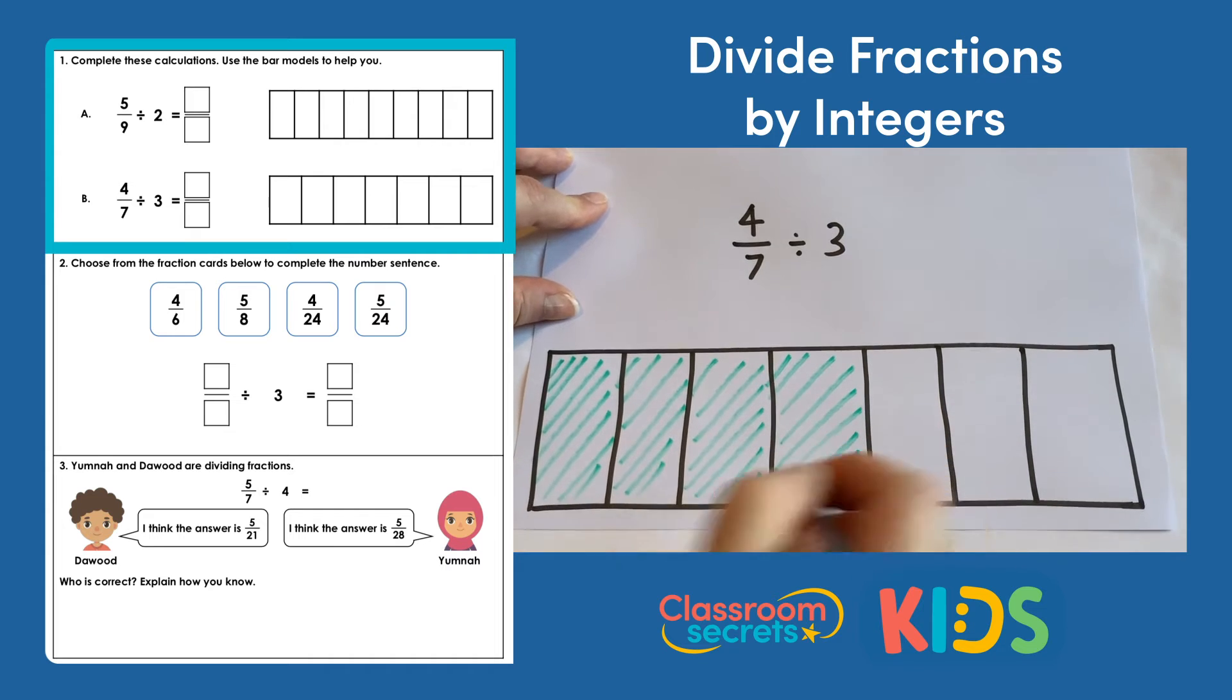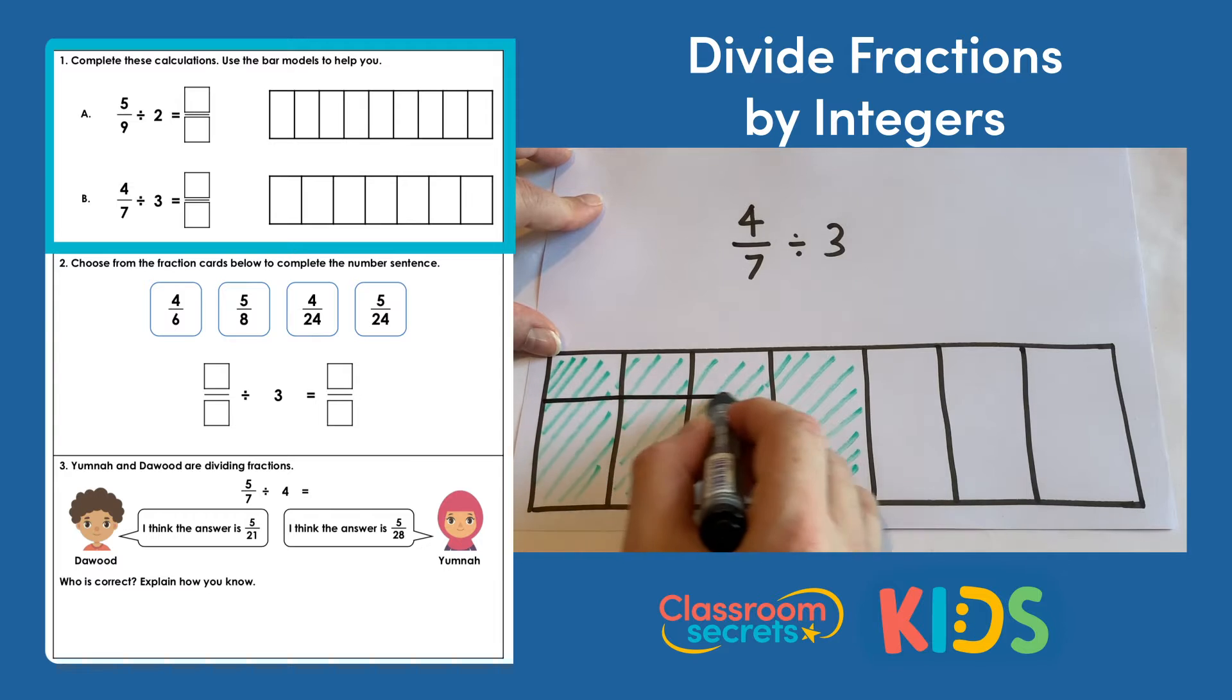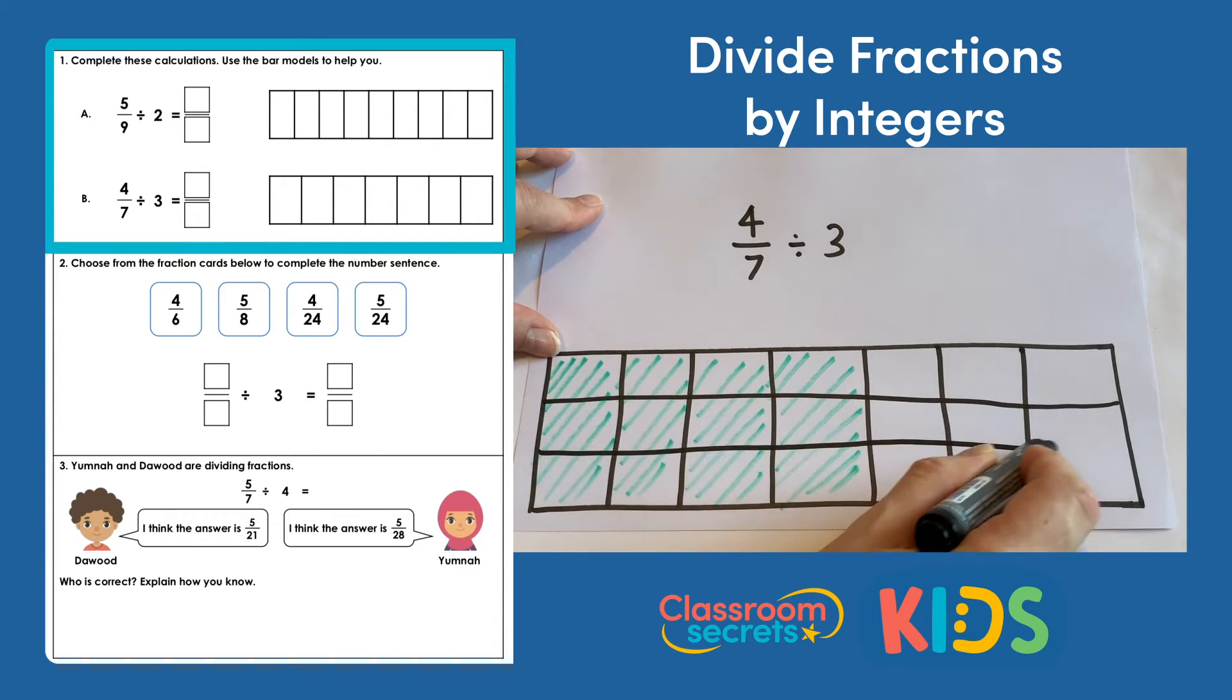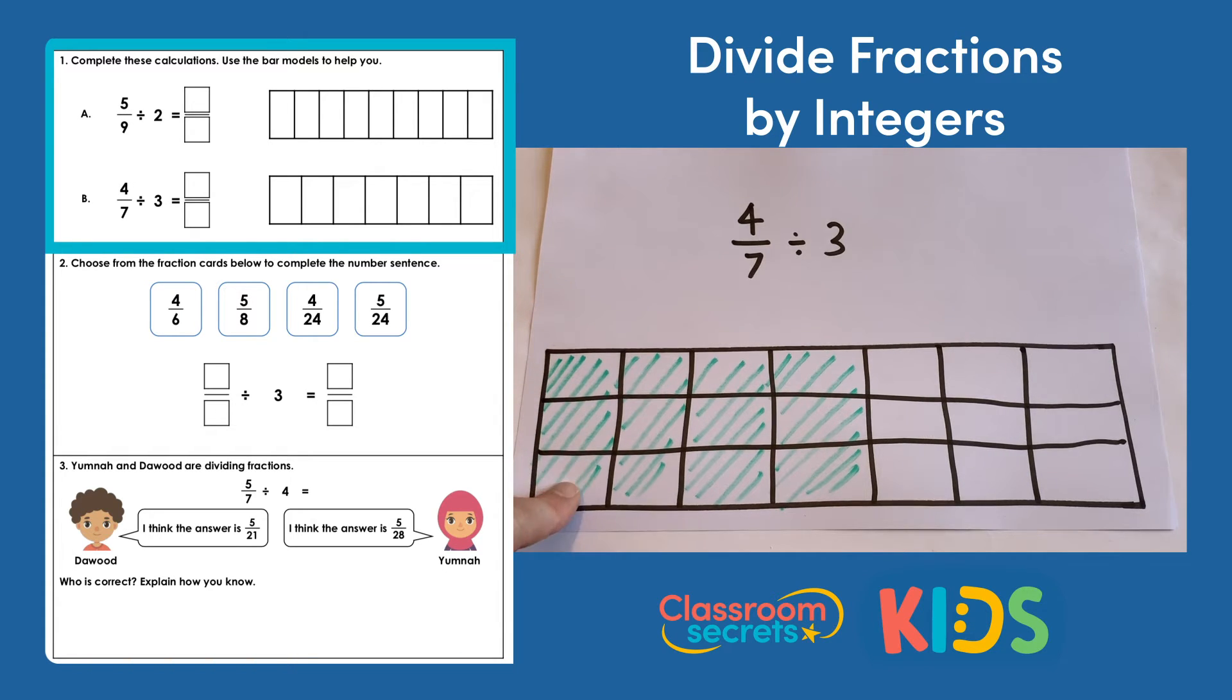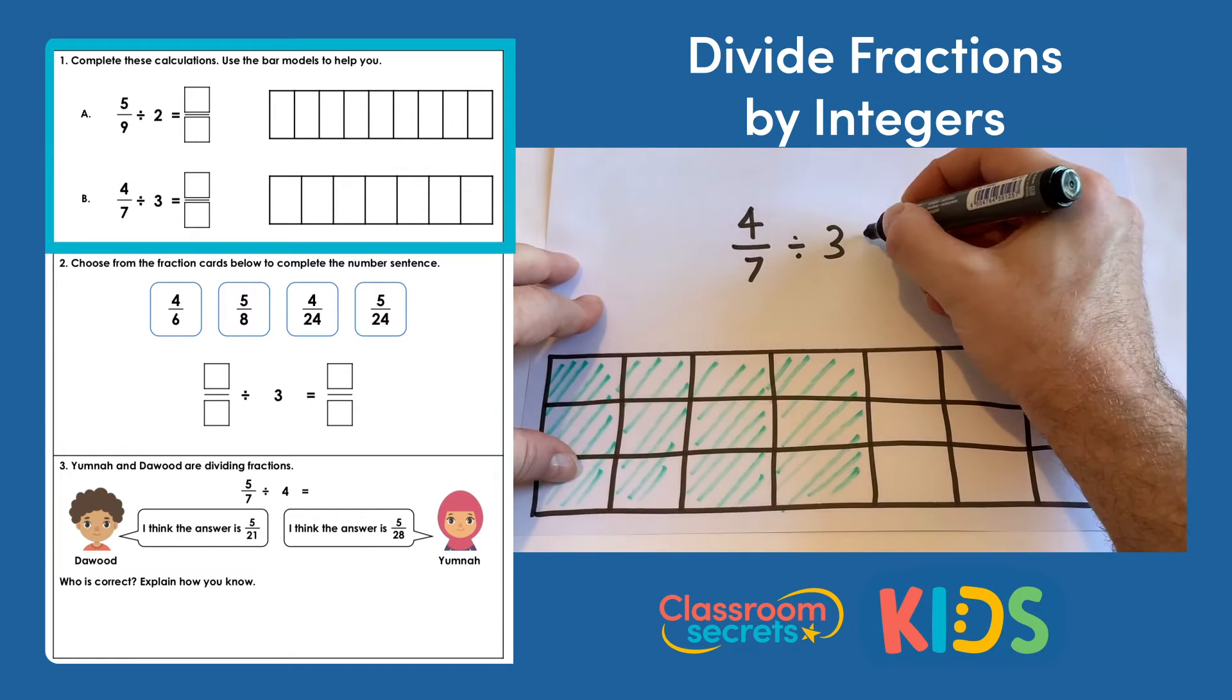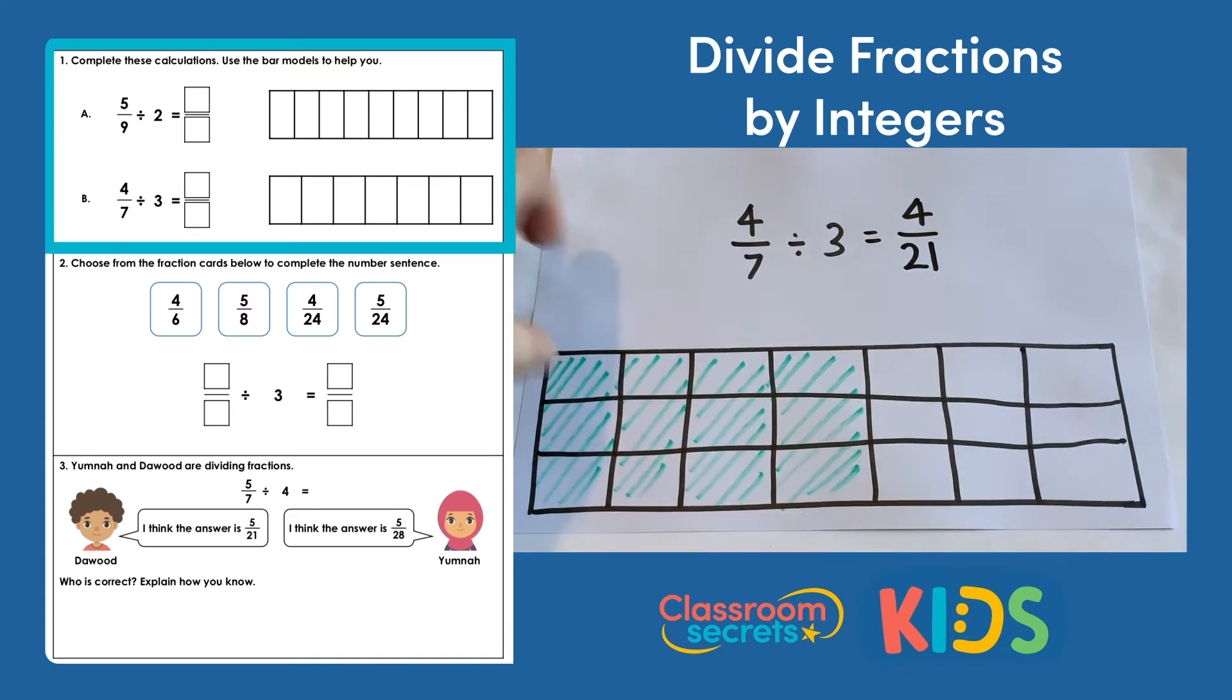And we're dividing our sevenths by 3. So let's divide all the sevenths by 3 so we can see how many equal parts the whole will have. And if we count those up we'll have 21. So there'll be 21 equal parts. We're talking about 4 of the sevens that we started with and we are splitting those into 3. So there'll be 1, 2, 3, 4 of those 21 equal parts. So 4 sevenths divided by 3 will be 4 twenty-firsts.